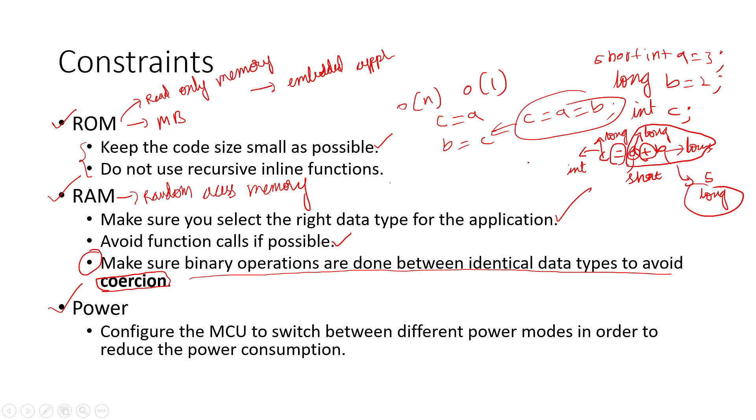While doing this, you're unnecessarily consuming additional memory even though you didn't intend to. It's better to perform binary operations between two data types of the same kind. This will avoid coercion - a major point everyone should focus on while developing embedded applications.